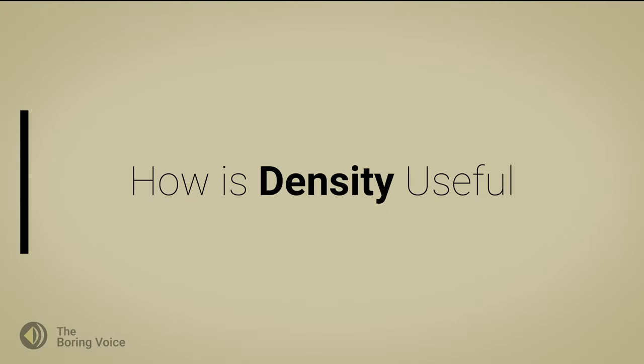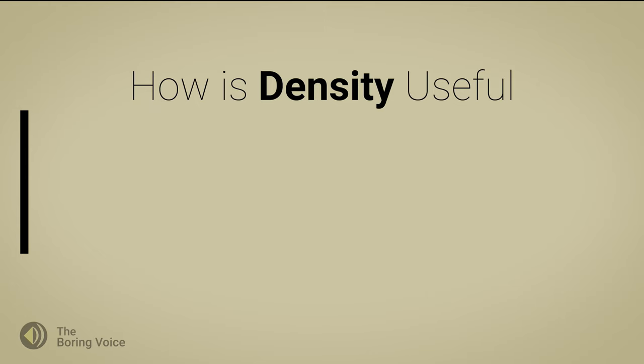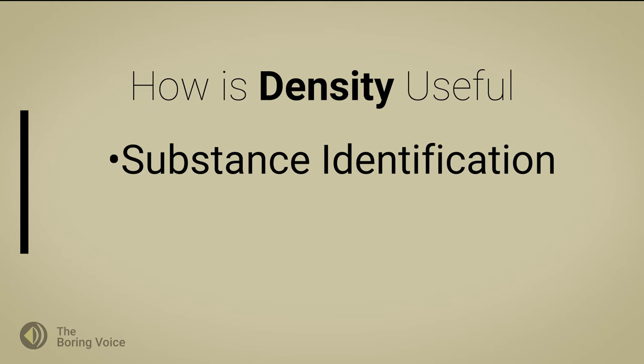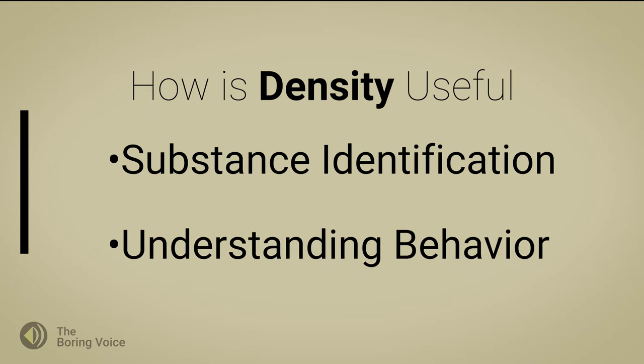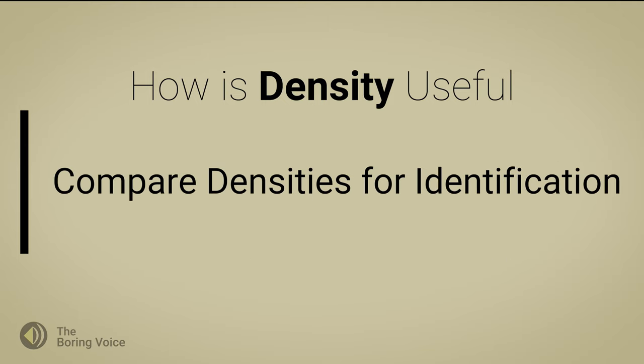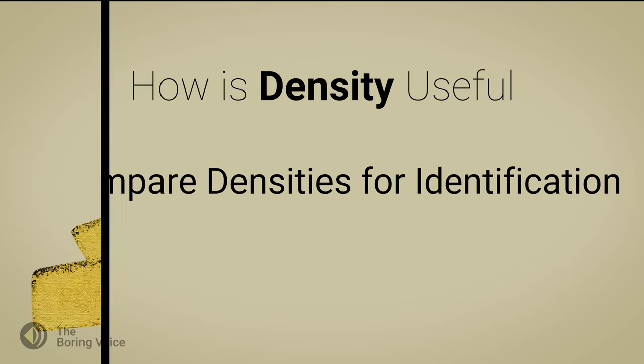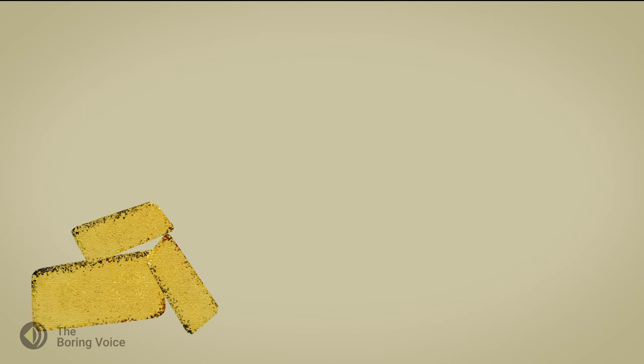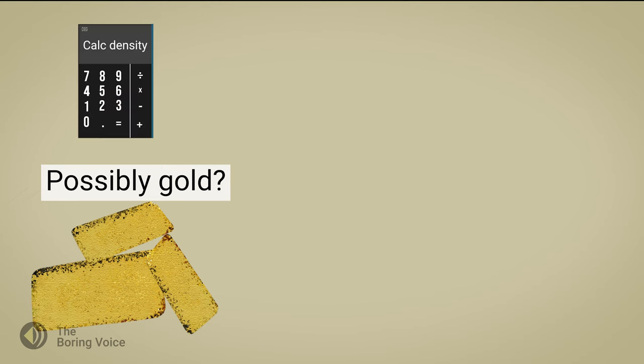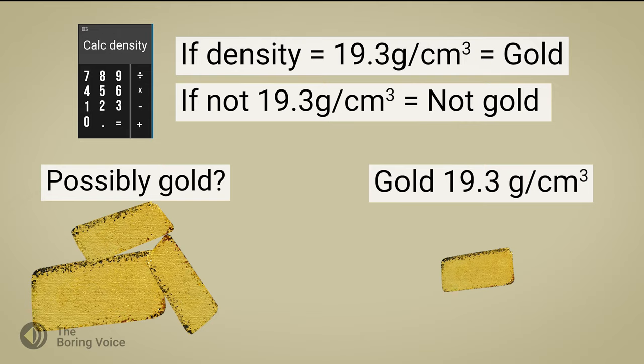So how is knowing an object's density useful? Well, knowing an object's density can help me positively identify the object or predict its behavior in relationship to other objects. I can compare the density of an unknown material to a known material's density to determine if they are the same material. For example, if I have something that looks like gold, I can calculate its density and compare that to the known density of gold. Density can help positively identify a substance.